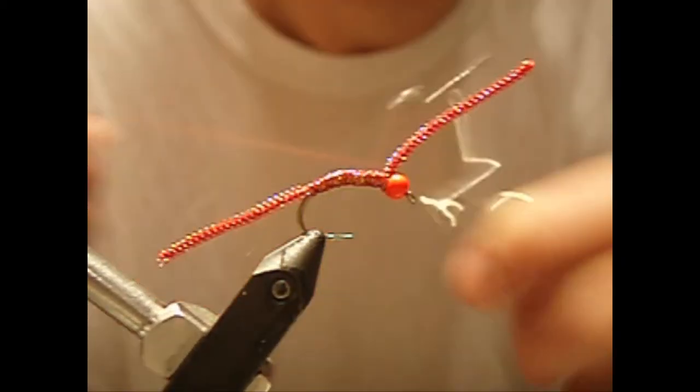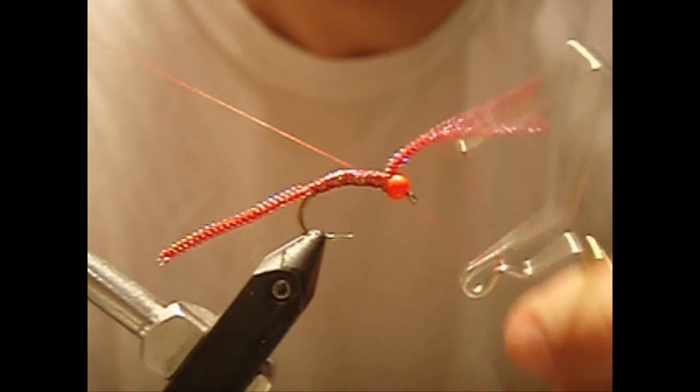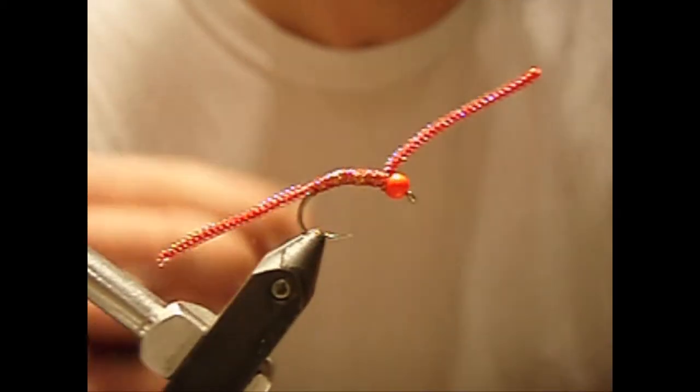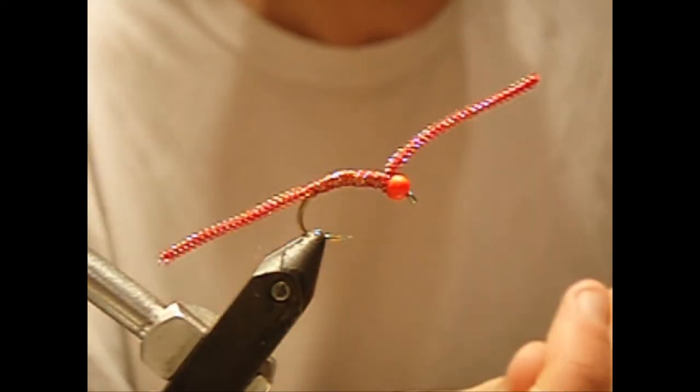Get your whip finish tool and do two five-turn whip finishes. There's five. And one, two, three, four, and five. Snip off your thread.